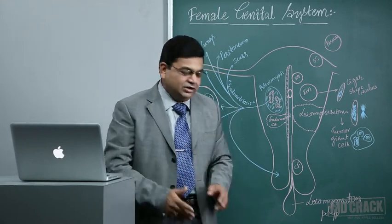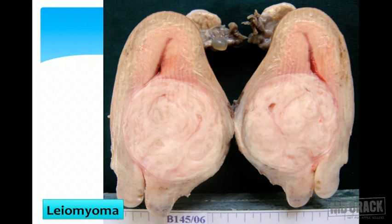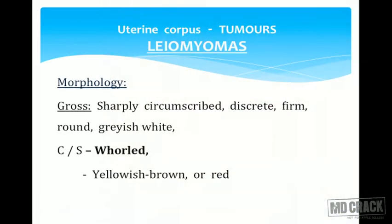The classical gross appearance of a leiomyoma on cut section is a whorled appearance — no areas of hemorrhage or necrosis, totally fibrotic, giving resistance on cutting. The uterus can be distorted by these leiomyomas. When multiple leiomyomas are present, we use the term leiomyomata. Morphologically, they are sharply circumscribed, discrete, firm to hard masses that can undergo degenerative changes like myxoid degeneration, fibrosis, calcification, and appear round and gray-white on cut section.